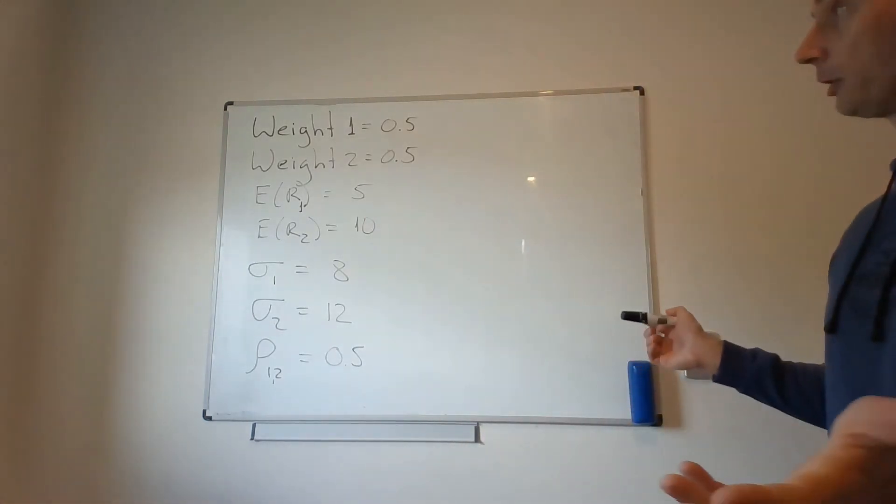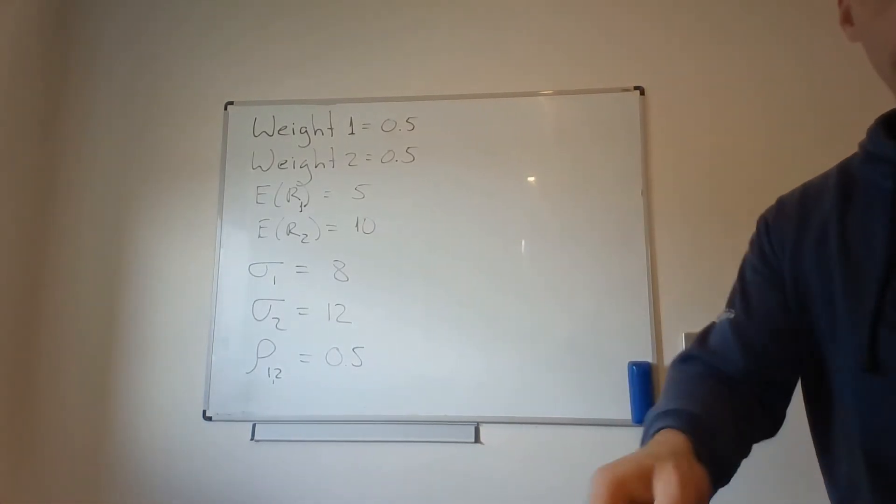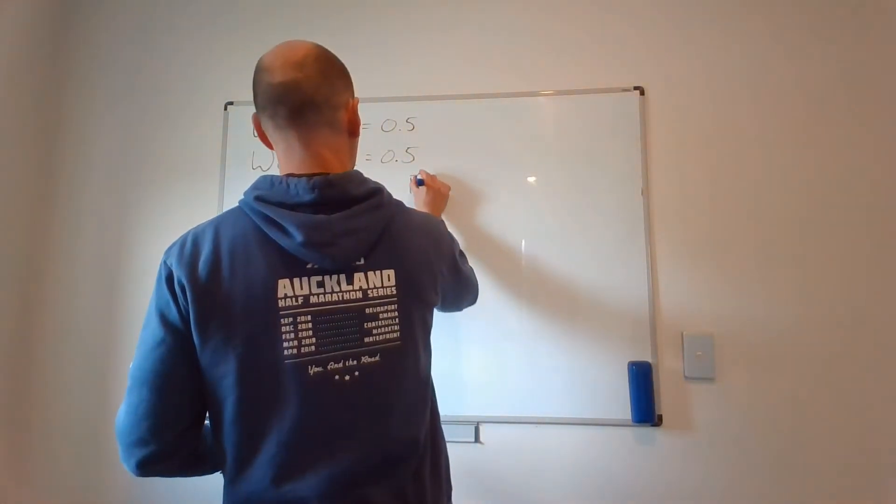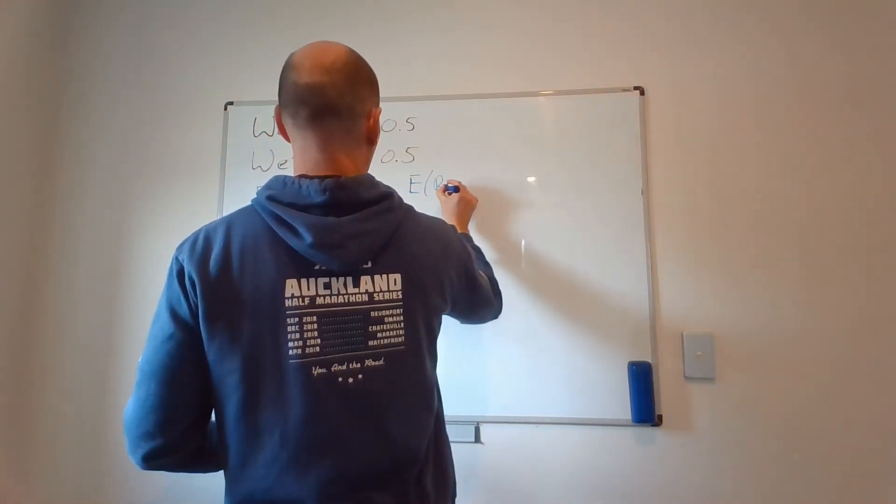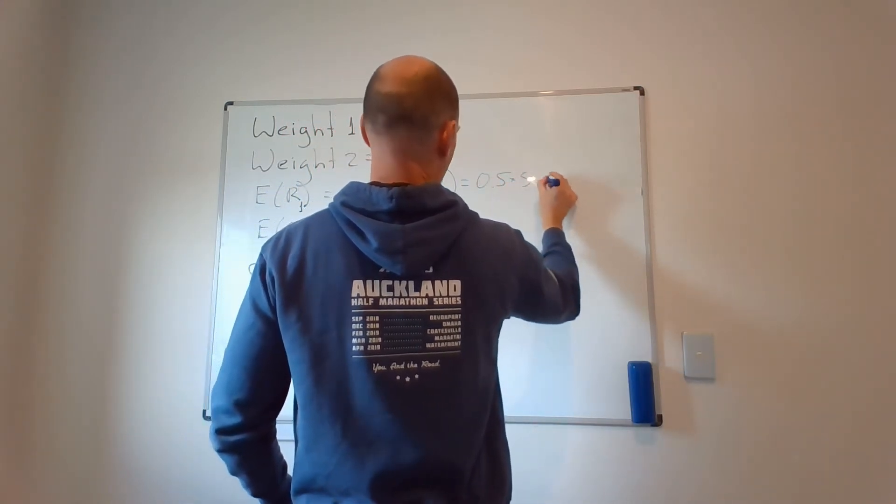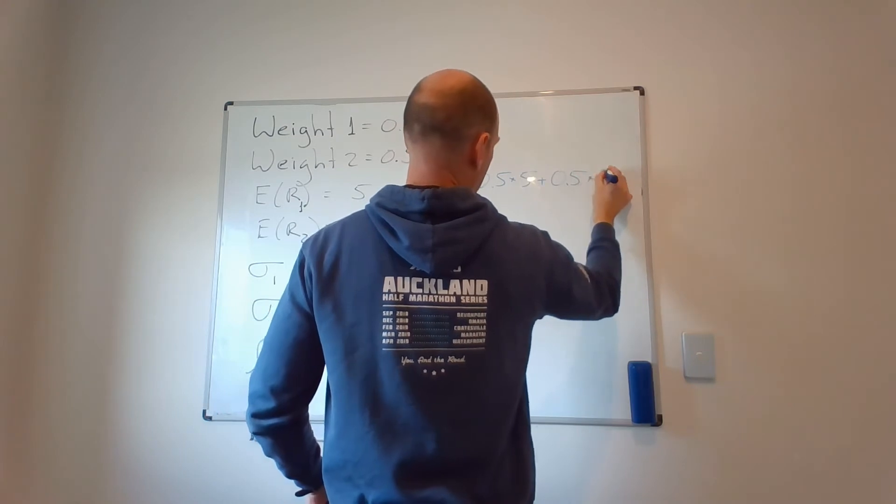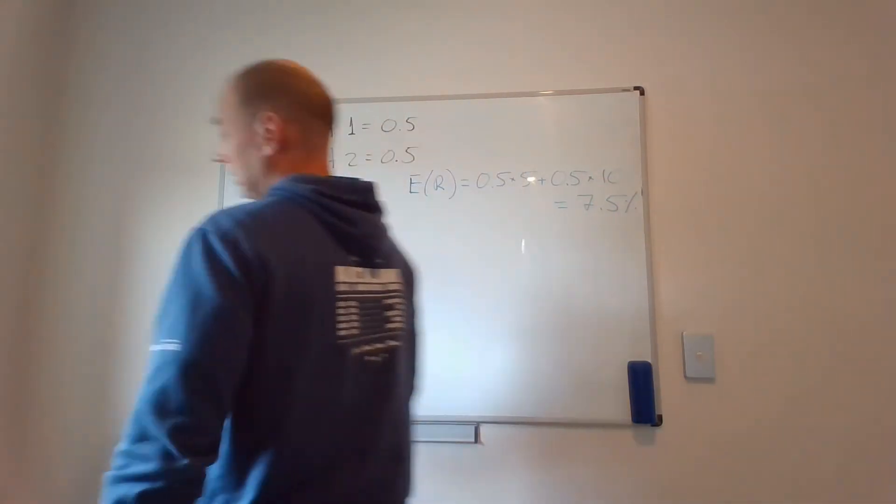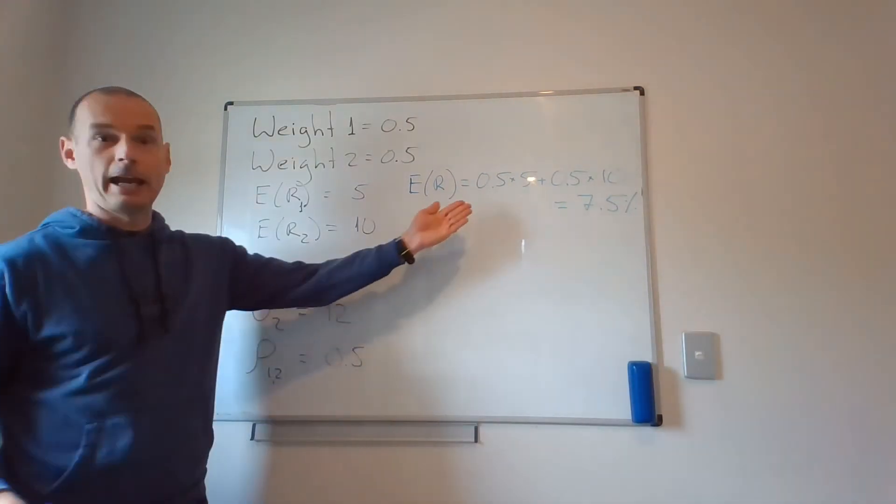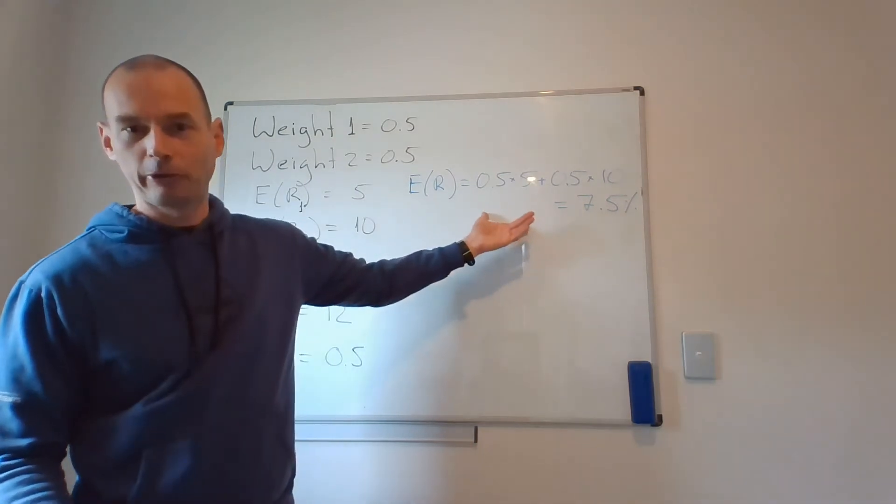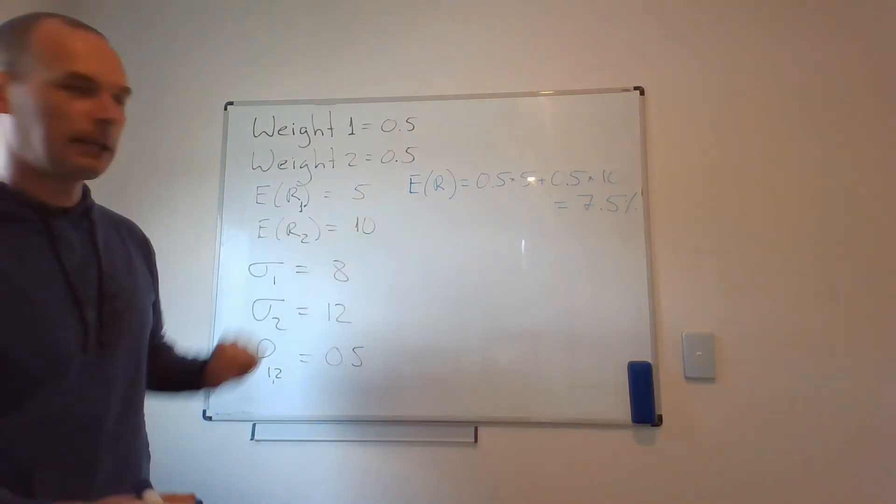Now, computing expected return is easy. Let me use a blue color here. So expected return on this portfolio is 7.5%. It's simply the weighted average of individual returns. And since it's a 50-50, it actually becomes a simple average of 5 and 10.